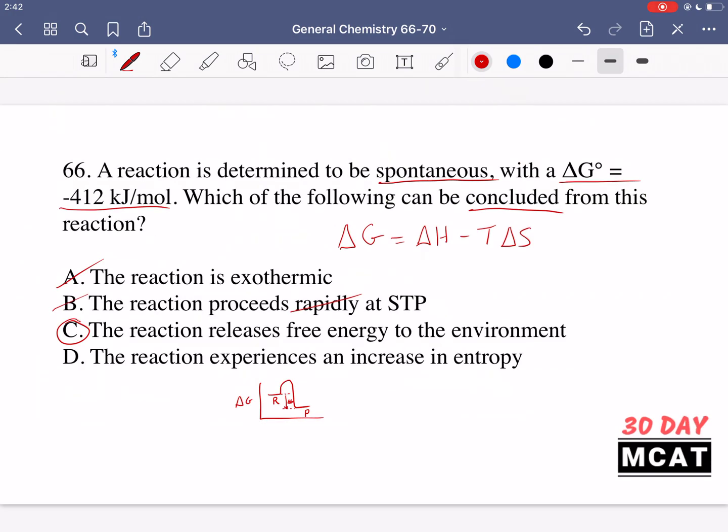And therefore free energy is released to the environment. That's what it means for something to have a negative delta G and for it to be spontaneous. That means it's releasing free energy. Otherwise, if delta G was positive or non-spontaneous, then it would be going up in free energy and taking in free energy instead of releasing it.